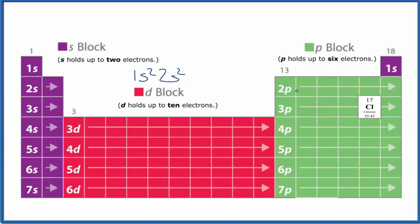Then we're at 2p. P holds 6 electrons: 1, 2, 3, 4, 5, 6, so 2p6.